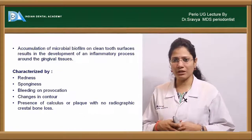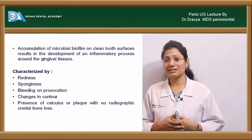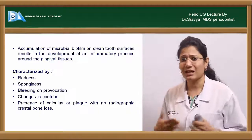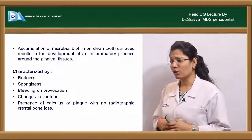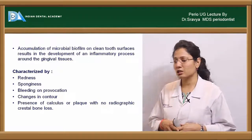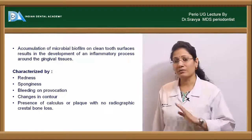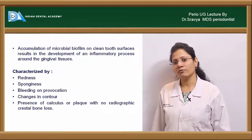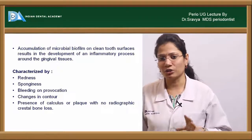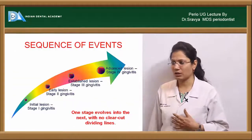As a result of inflammation, clinically the gingiva will show certain clinical signs which include redness, sponginess, bleeding on probing or provocation of bleeding, changes in contour, and presence of calculus and plaque — but no radiographic changes of bone loss, which are seen only if your gingiva is inflamed and has not reached the periodontal ligament.